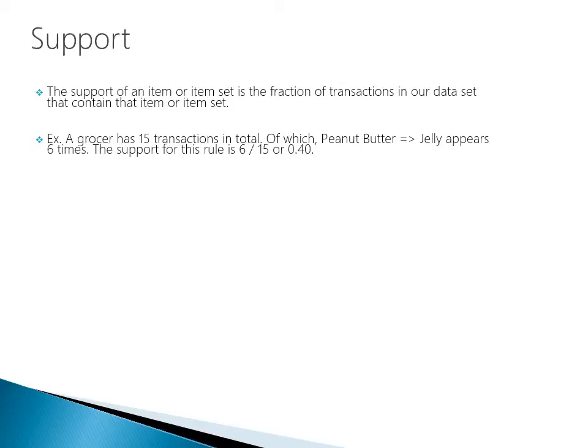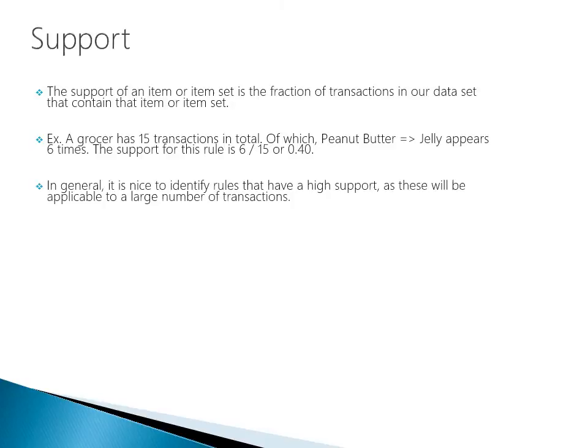The support of an item or item set is the fraction of transactions in our dataset that contain that item or item set. For example, if a grocer has 15 transactions in total — 15 receipts — of which peanut butter and jelly appears six times, the support for this rule is six divided by fifteen, or 0.40. In general, it's nice to identify rules that have a high support, as these will be applicable to a large number of transactions.